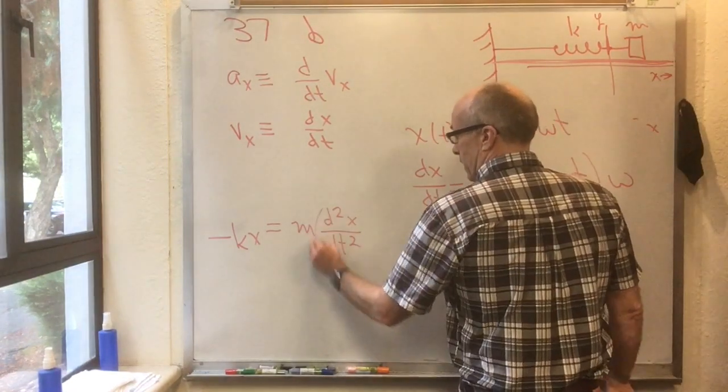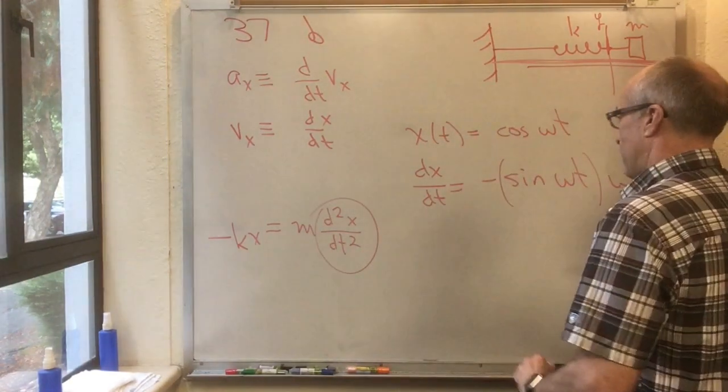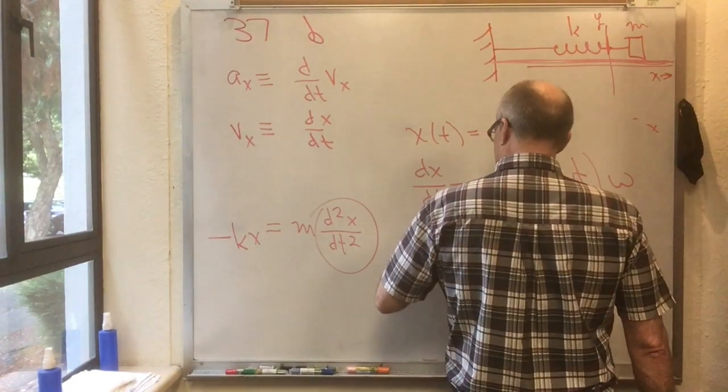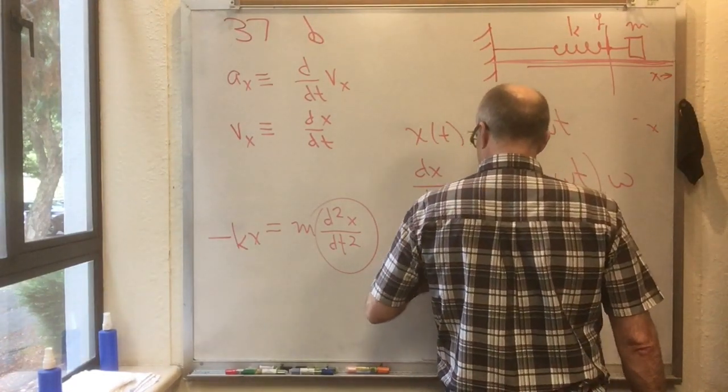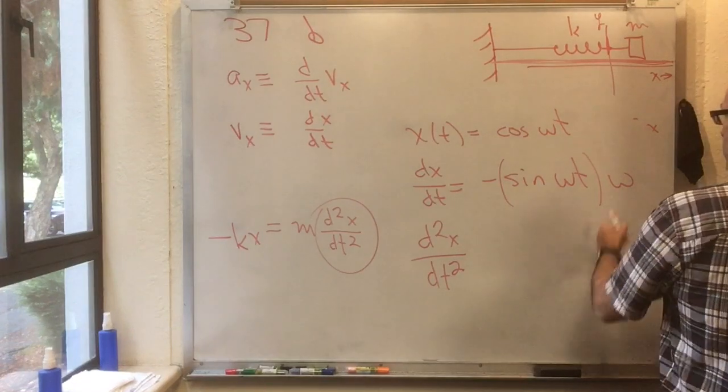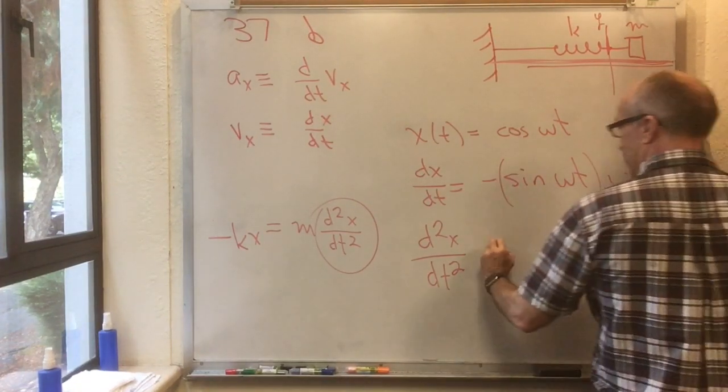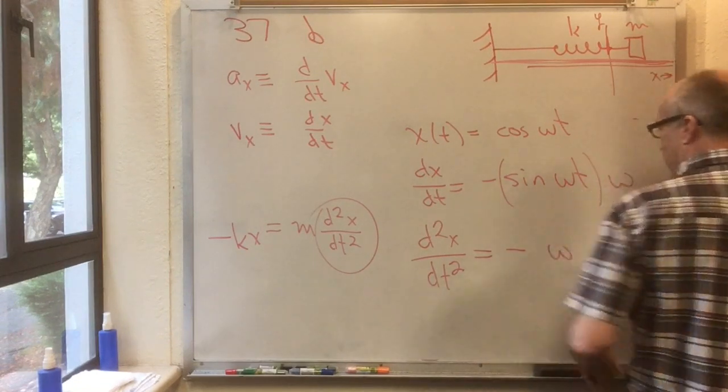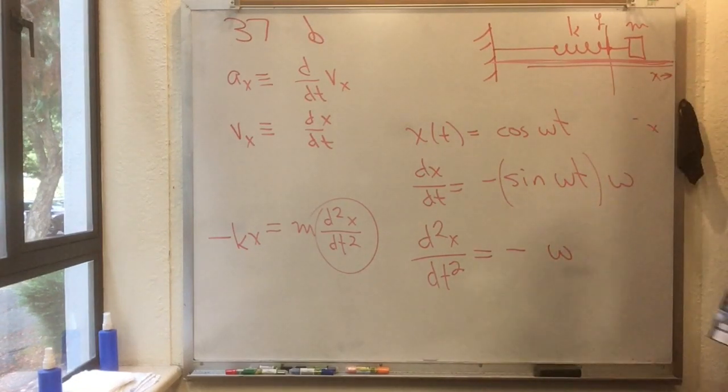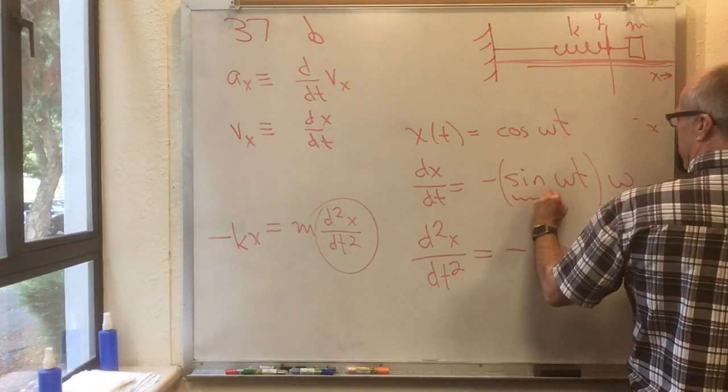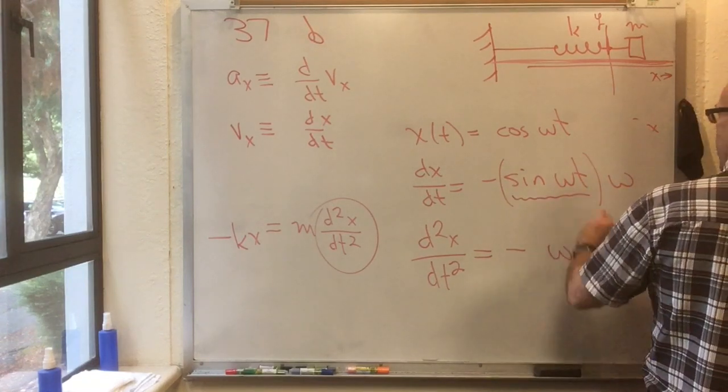But I'm supposed to take a second derivative here. So I need to calculate d squared x dt squared. You usually put the minus omega in front, so you don't need those parens. So let's do that. Put the minus omega in front. Then I have to take the derivative of that. Derivative of sine is cos.